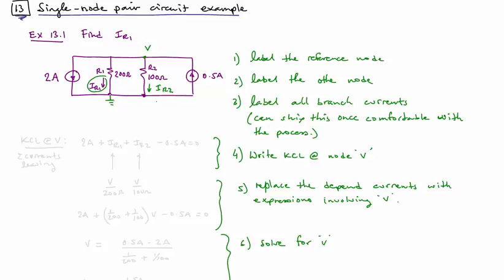So next we want to write a KCL equation, and we're going to write that at our node V. And I'm going to sum currents leaving.